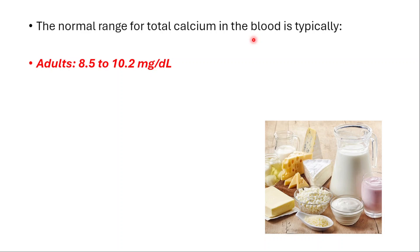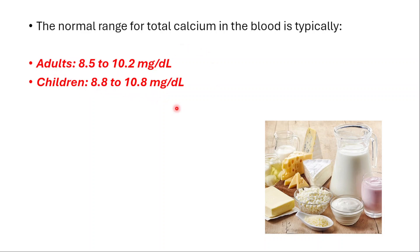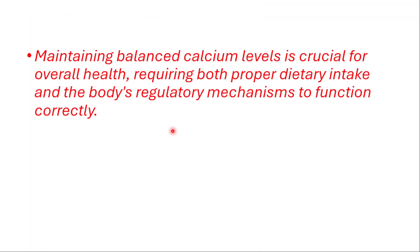The normal range for total calcium in the blood is typically 8.5 to 10.2 milligrams per deciliter for adults. For children it's 8.8 to 10.8 mg/dL, and for infants it's 8.7 to 11 mg/dL. Maintaining balanced calcium levels is crucial for overall health, requiring both proper dietary intake and the body's regulatory mechanisms to function correctly.